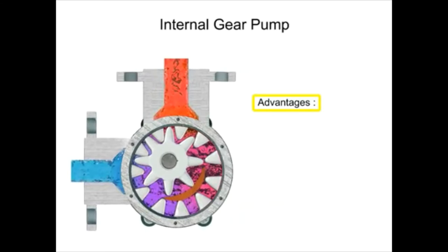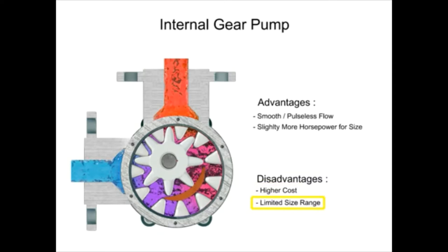Advantages of internal gear pumps are a smooth and almost pulseless flow and slightly more horsepower for its size. Disadvantages are its higher cost, limited size range, low to moderate pressure ratings, and few sources of manufacture.